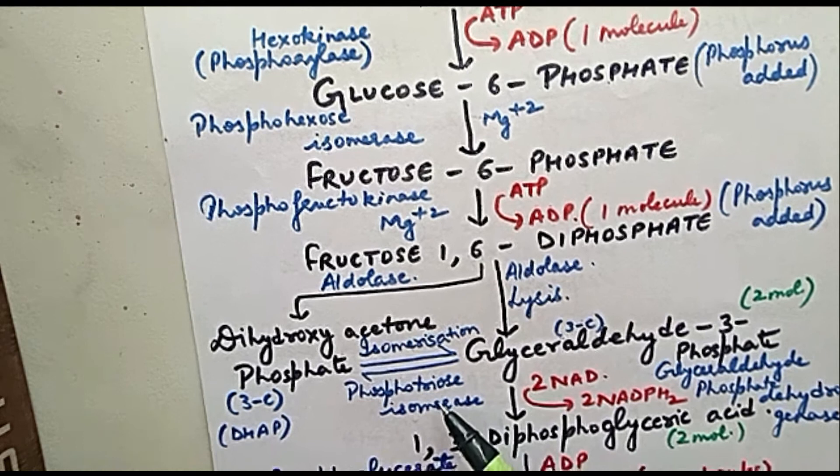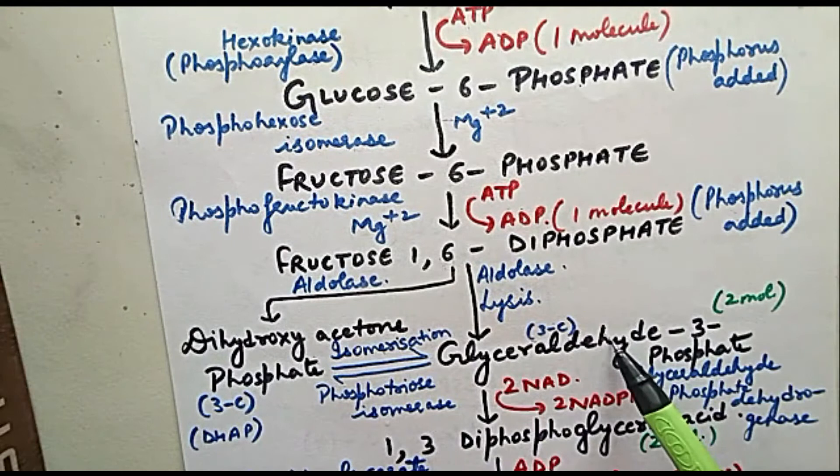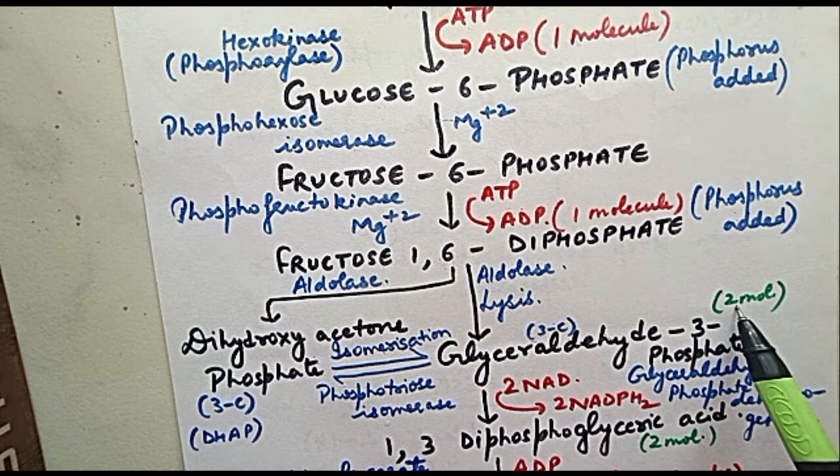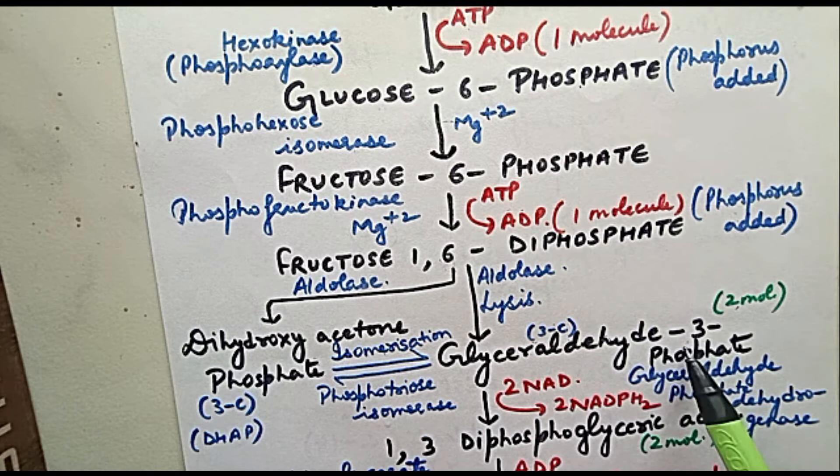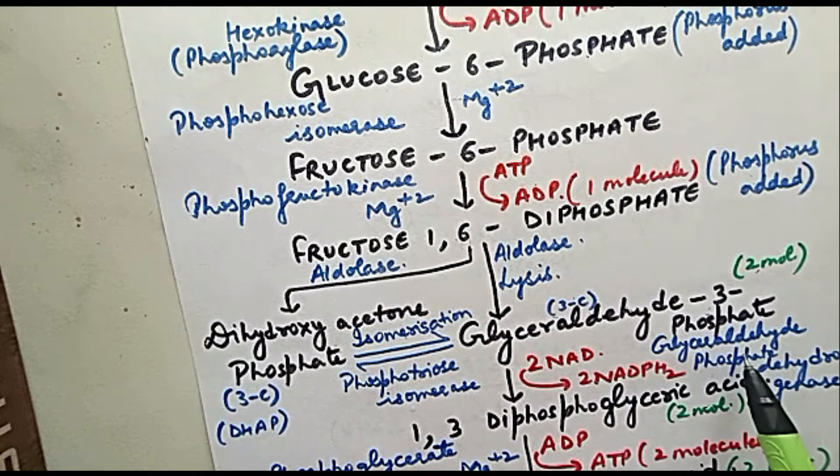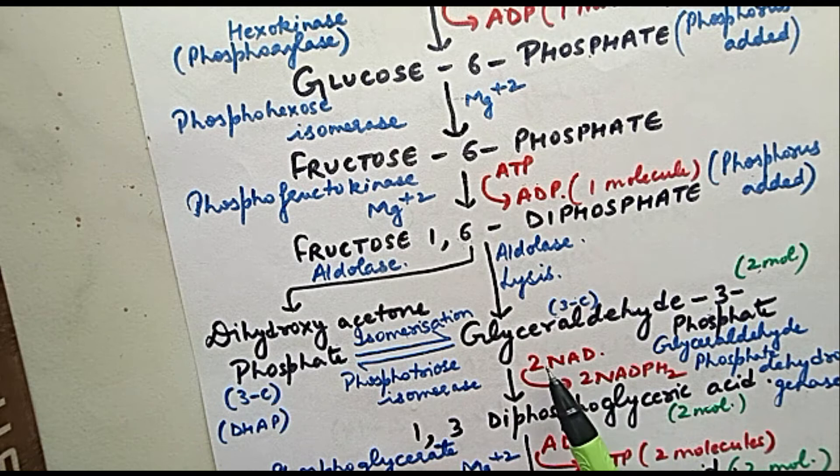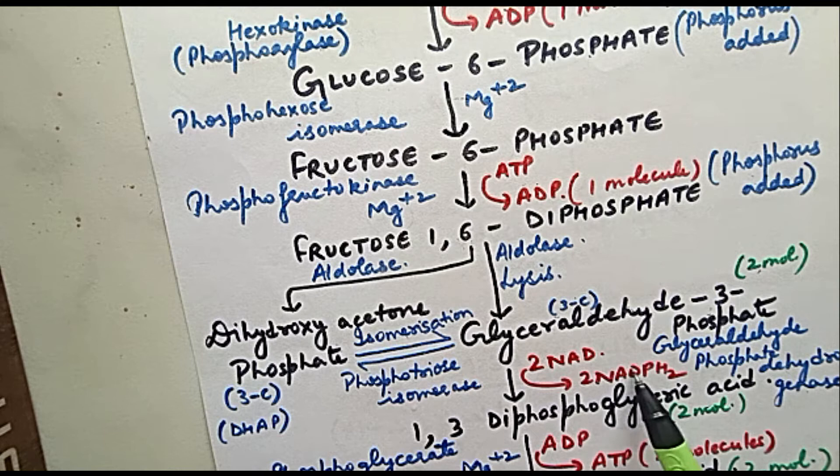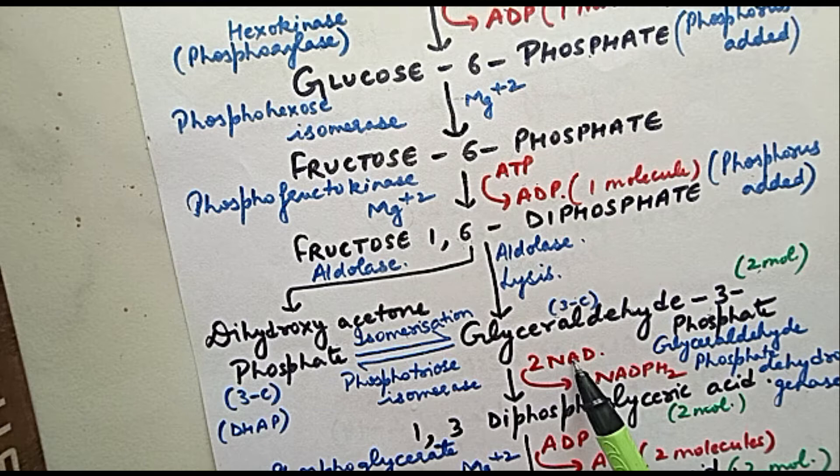Now, glyceraldehyde-3-phosphate is made into two molecules. We have to move forward the process with 2 molecules. Glyceraldehyde-3-phosphate will get converted into 1,3-diphosphoglyceric acid, 2 molecules. Which enzyme has been used? Glyceraldehyde phosphate dehydrogenase. Here, 2 molecules of NAD got converted into 2 molecules of NADPH2. NAD is nicotinamide adenine dinucleotide.